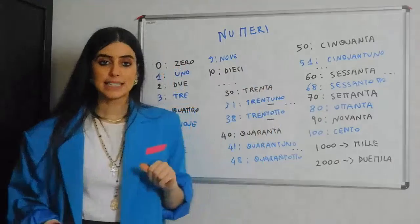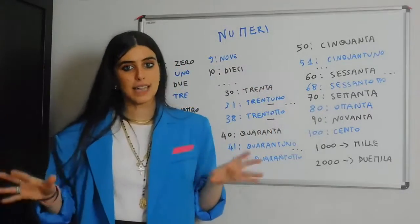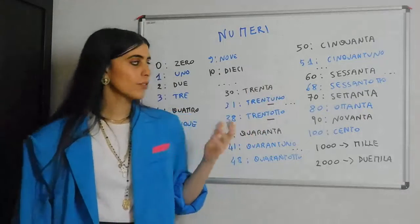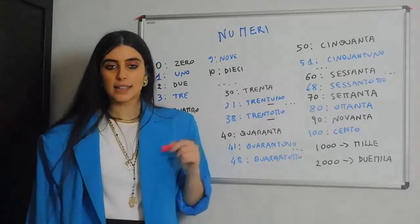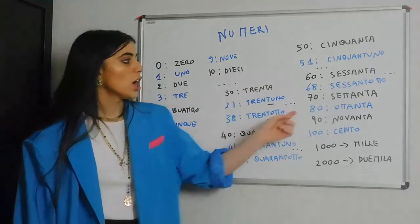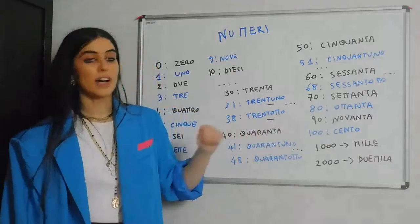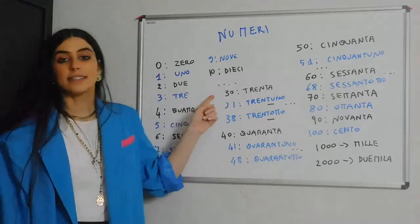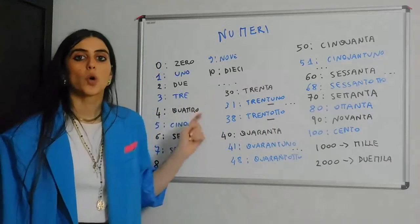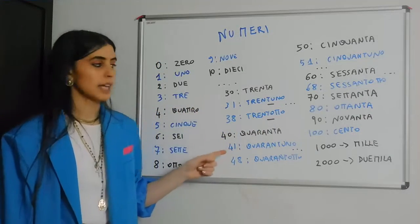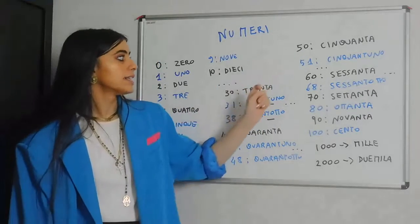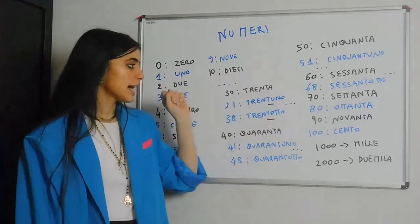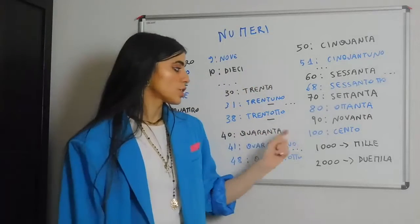Sessanta — soft, nice and easy — with sessantotto of course. Then settanta, ottanta, novanta, cento. So to recap, the tens are: venti, trenta, quaranta, cinquanta, sessanta, settanta, ottanta, novanta, cento.